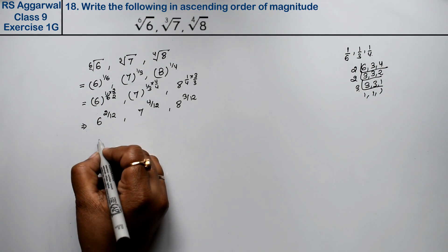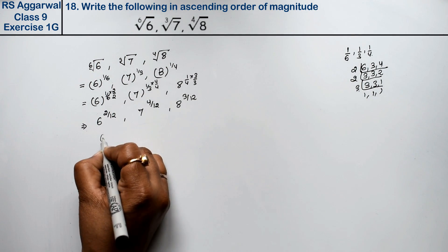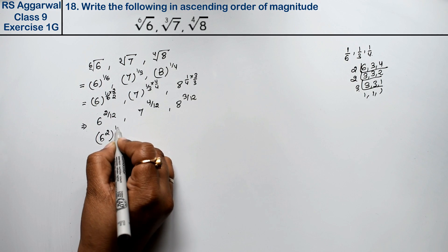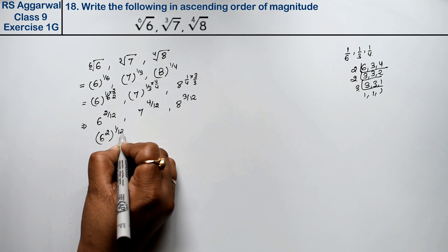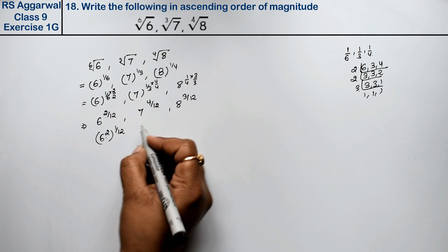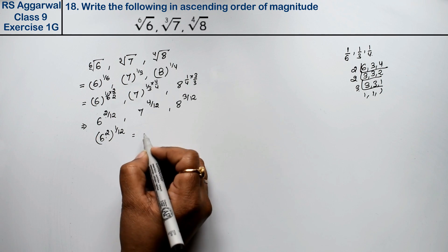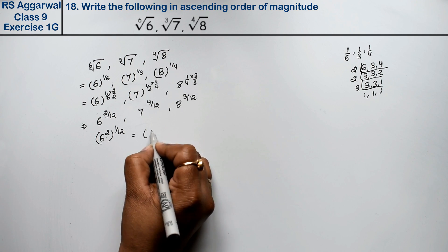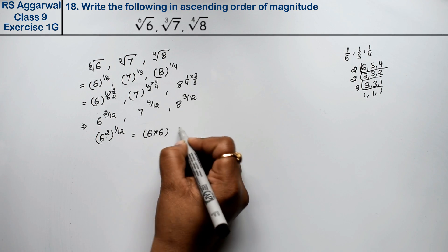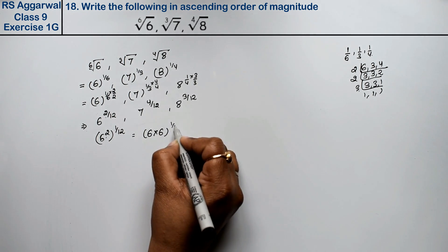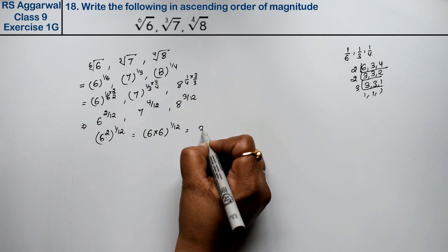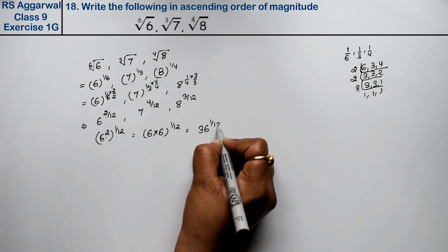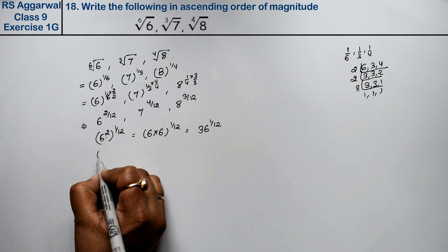So 6^(2/12) can be written as (6²)^(1/12). We calculate 6 into 6, which gives us 36. So this becomes 36^(1/12). Right friends, that's the first one done.